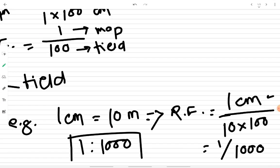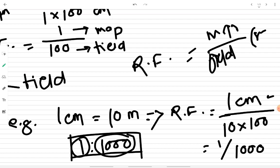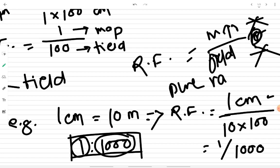The ratio maintained between the map and the field data is 1 to 1000 — meaning the map is one thousand times smaller than what is actually present on the field. Technically, RF can be defined as one unit length on the plan representing the same number of units on the field, expressed in the same units. When dimensions in numerator and denominator are in the same units, they cancel out, leaving a pure numerical ratio.